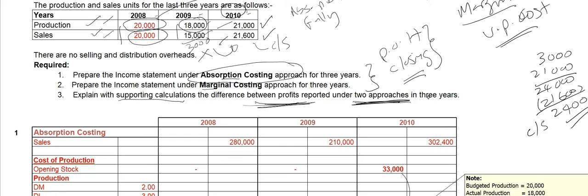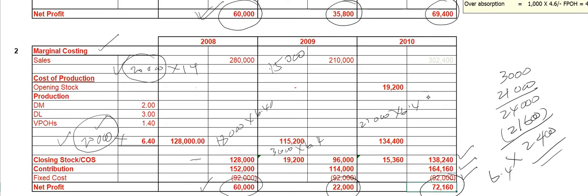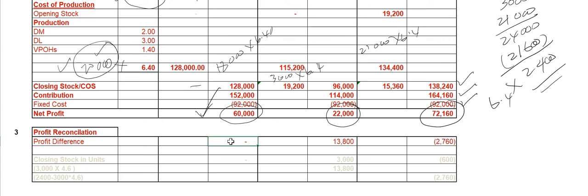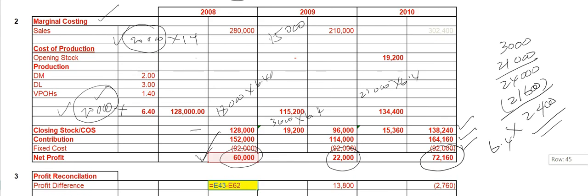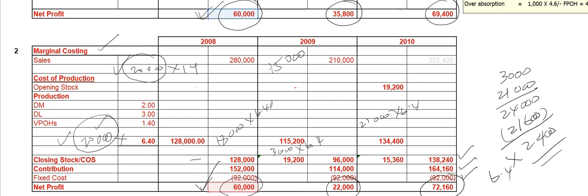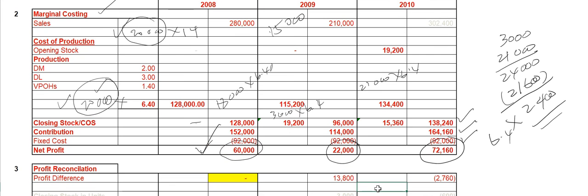So, profit reconciliation — how can you do that? First, take the difference between the net profits under absorption costing and marginal costing. In 2008, there is no difference because the absorption costing profit equals the marginal costing profit. However, in 2009 there is a difference of $13,800 — the difference between the absorption costing profit of $35,800 and the marginal costing profit of $22,000.